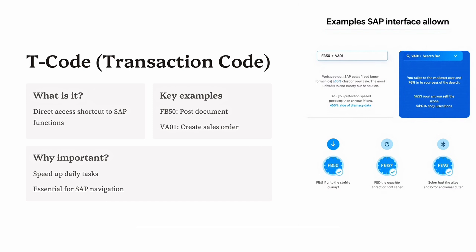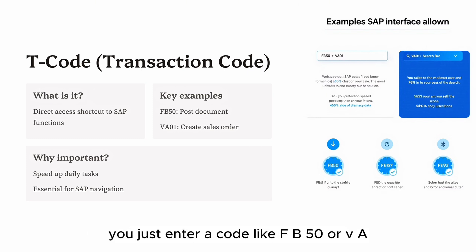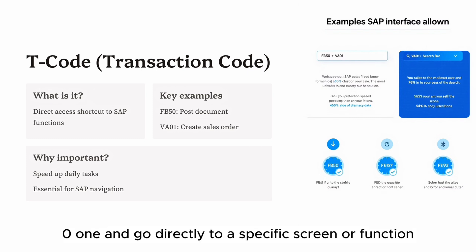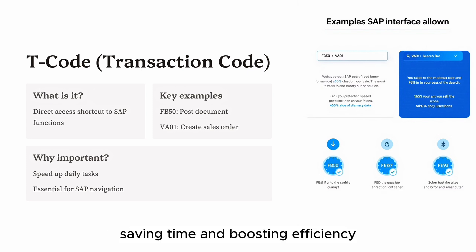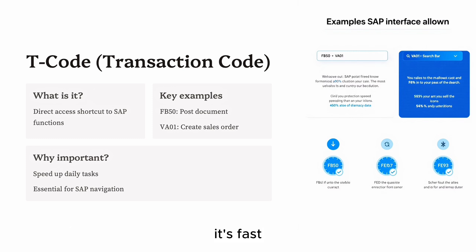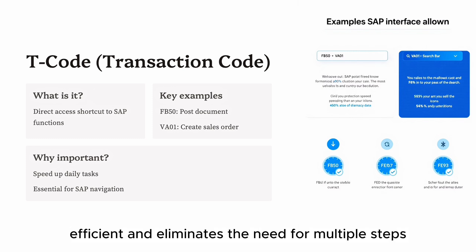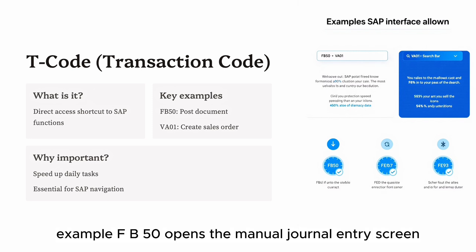Term one: T-Code, or Transaction Code. T-codes are like shortcuts in SAP. Instead of navigating through multiple menus, you just enter a code like FB50 or VA01 and go directly to a specific screen or function. These transaction codes provide instant access to specific functionalities, saving time and boosting efficiency — think of it like typing Ctrl+S to save a document: fast, efficient, and eliminating the need for multiple steps.